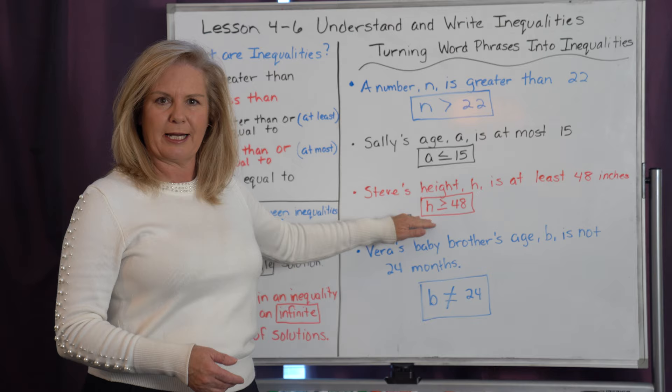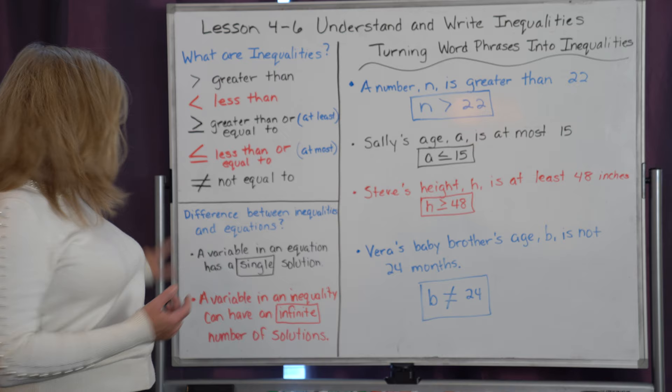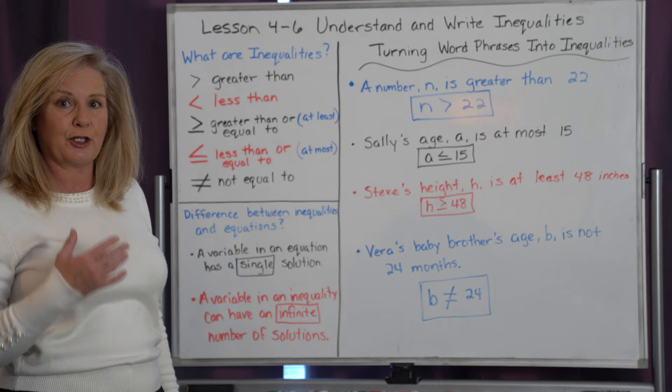The last one is an example of not equal to. It says Vera's baby brother's age, B, is not 24 months.